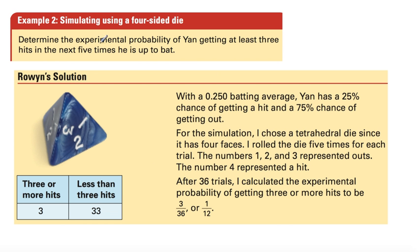Next experiment here is simulating using a four-sided die. Same idea as the spinner. With a 250 batting average, he has a 25% chance of getting a hit, 75% of not getting a hit. For the simulation, use a tetrahedral die. Since it has four sides, I rolled the die five times for each trial. The numbers 1, 2, and 3 represented outs. The number 4 represented a hit. After 36 trials, he calculated the experimental probability of getting three or more hits to be 3 out of 36, or 1 in 12.